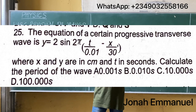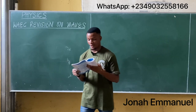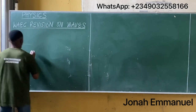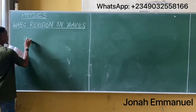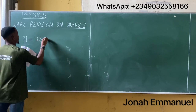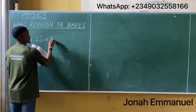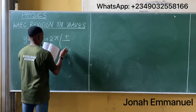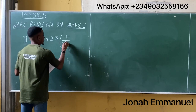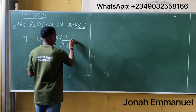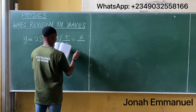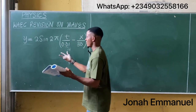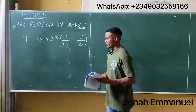First things first, I'll get down the equation. The equation given here is y = 2 sin(2π(t/0.01 − x/30)).